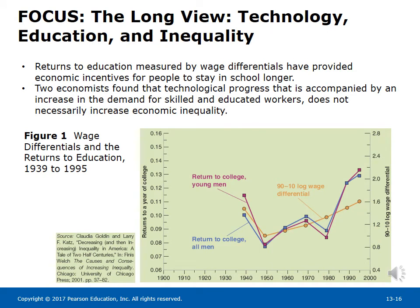The Long View: Technology, Education, and Inequality. Returns to education, measured by wage differentials, have provided economic incentives for people to stay in school longer. Two economists found that technological progress accompanied by an increase in the demand for skilled and educated workers does not necessarily increase economic inequality. Figure 1 shows wage differentials and returns to education from 1939 to 1995. Up to 1950, wage differentials fell because the increase in demand for skilled workers was more than offset by an increase in supply. Wage differentials started to go up after the 1980s, as relative supply continued to increase but not fast enough to match the continued increase in relative demand.